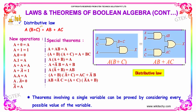Here is the distributive law and its verification. Some important identities to note: a plus 0 is equal to a; a plus 1 is equal to 1; a dot 0 is equal to 0; a dot 1 is equal to a; a plus a complement is equal to 1; a dot a is equal to a; a dot a complement is equal to 0; and a double complement is nothing but a itself. These are all the basic operations.